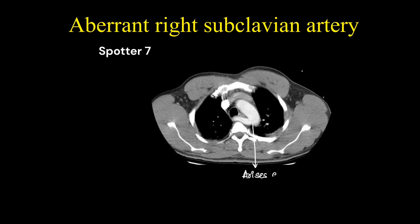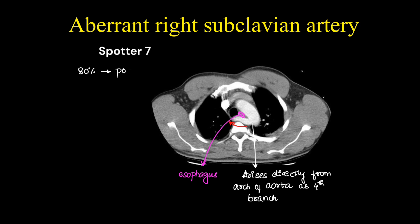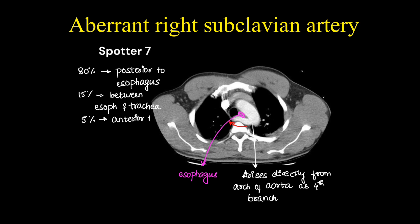This is a case of aberrant right subclavian artery. The right subclavian artery is arising directly as a branch of the arch of the aorta as a fourth branch and moving towards the right side. In our case, it is moving posterior to the esophagus. In 80% of cases it is posterior to the esophagus, 15% between the esophagus and trachea, and in 5% of cases it can go anterior to the trachea.